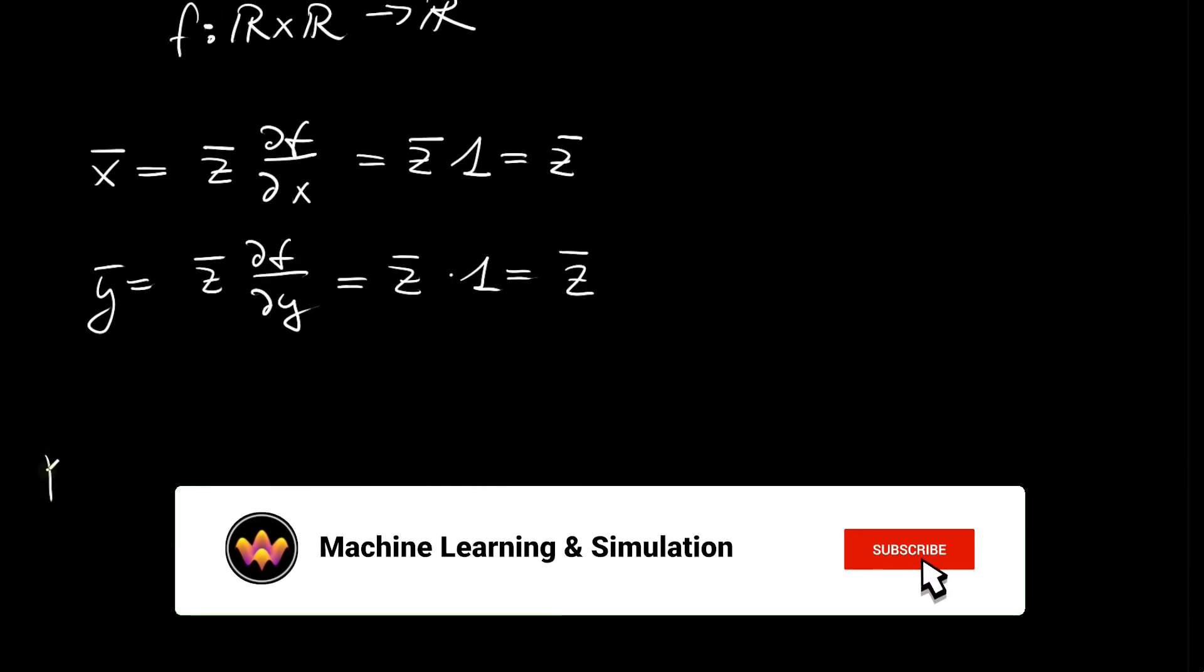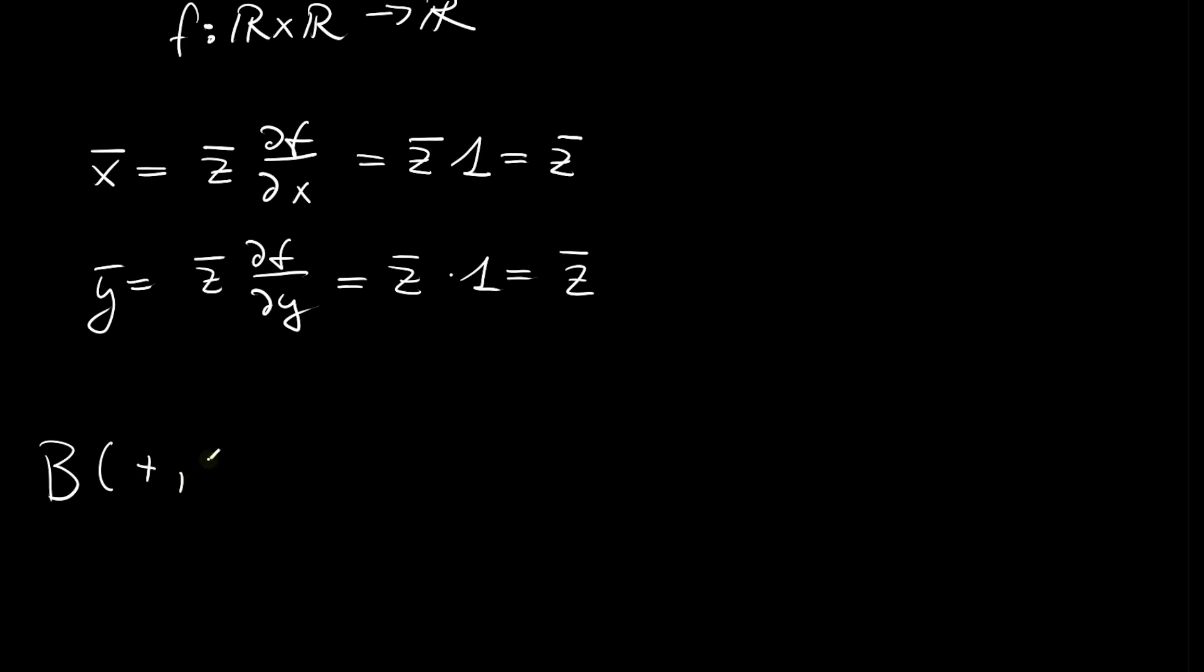Hence in total we can write down the pullback rule on addition which takes as inputs x and y, so the primal inputs, as well as cotangent information on the output, and then it maps it first to the primal computation which is x plus y, as well as to the cotangents on the input which are just given in terms of z bar and z bar.